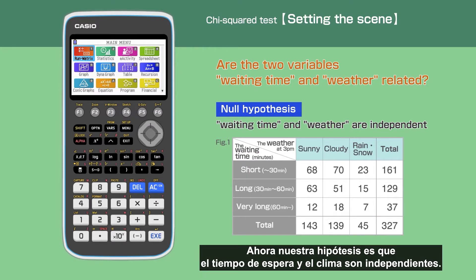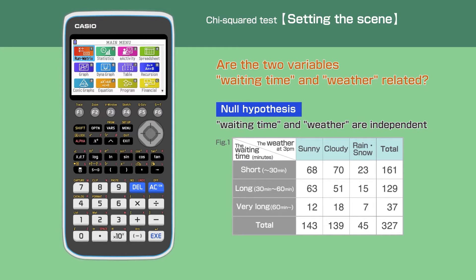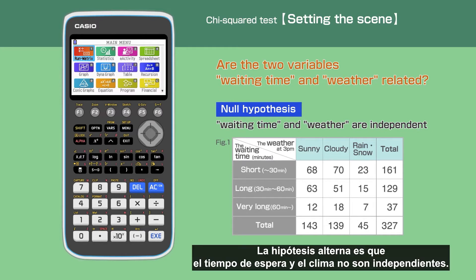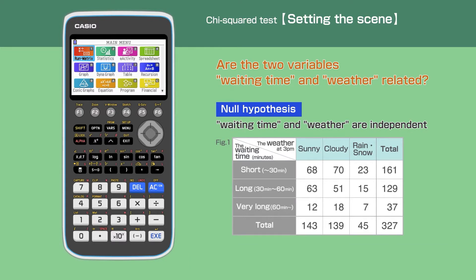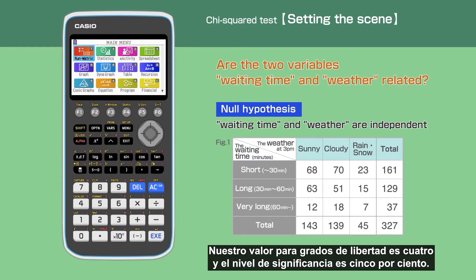There are 327 days of data, excluding maintenance days. The organized data is shown in a table. Our null hypothesis is that waiting time and weather are independent. The alternative hypothesis is that waiting time and weather are not independent. Our degree of freedom is four and the significance level is five percent.